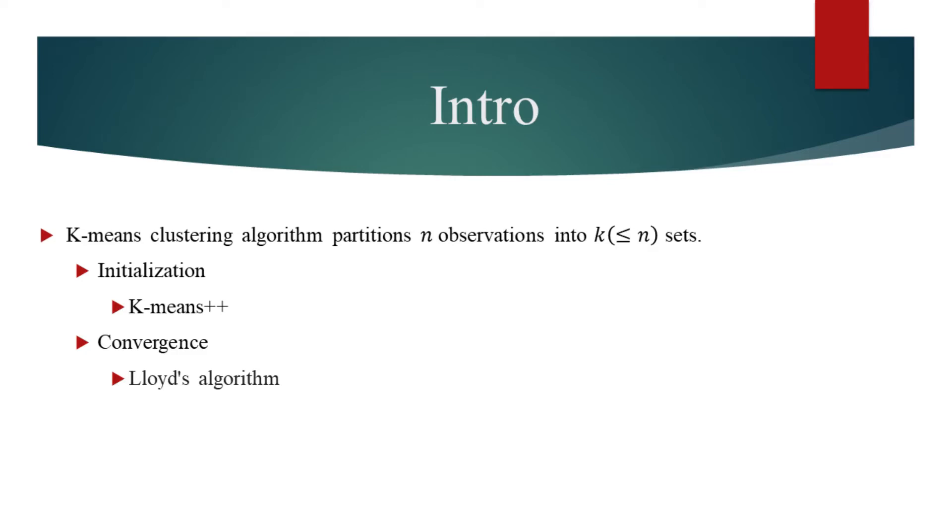K-means algorithm partitions the data into k different sets. The algorithm consists of two steps: initialization and convergence of centroids.